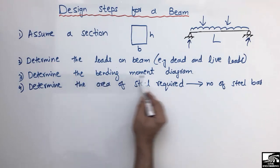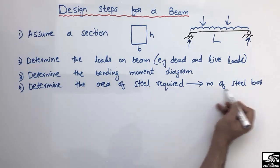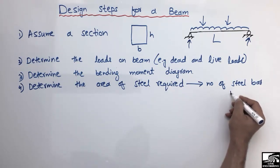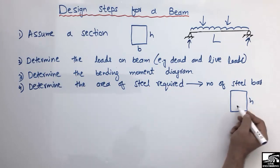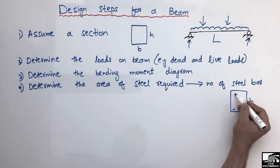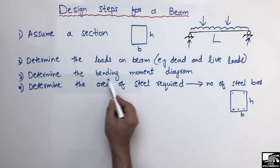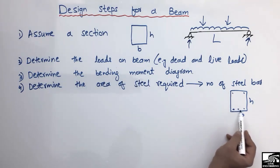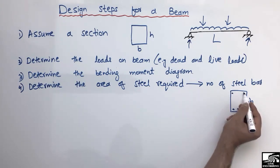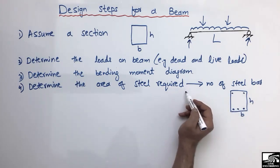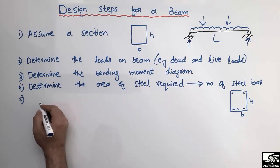The fourth step: after determining the bending moment diagram, we find the area of steel required, and from that we determine the number of steel bars. These steel bars are the main bars in the beam. Looking at the cross-section — the width and height — these are the main bars in compression and tension. The area of steel found from the bending moment diagram gives us the main reinforcement bars. Note that these main bars do not correspond to the shear reinforcement, which are the stirrups.